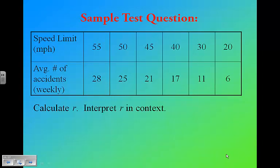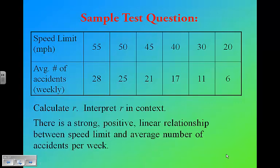Sample test question: speed limit and average number of accidents weekly. We're going to graph this, calculate r, and interpret r in context. If you put this into your calculator, and I will show you how to do this on the 84 tomorrow in class, you'd be able to interpret r and figure out that in this case, as the speed limit goes up, the number of accidents also goes up. There is a strong positive linear relationship between speed limit and the average number of accidents per week.